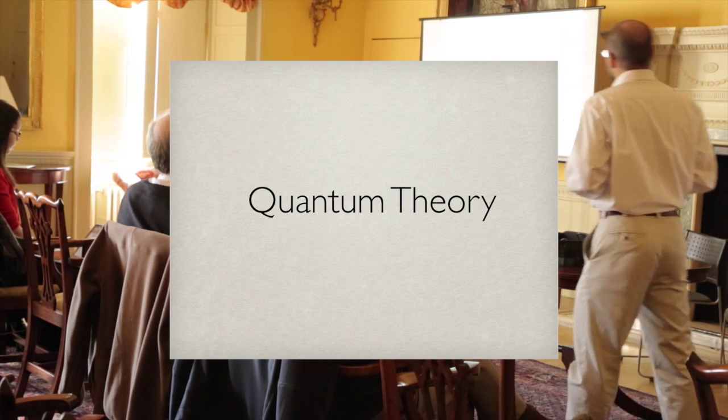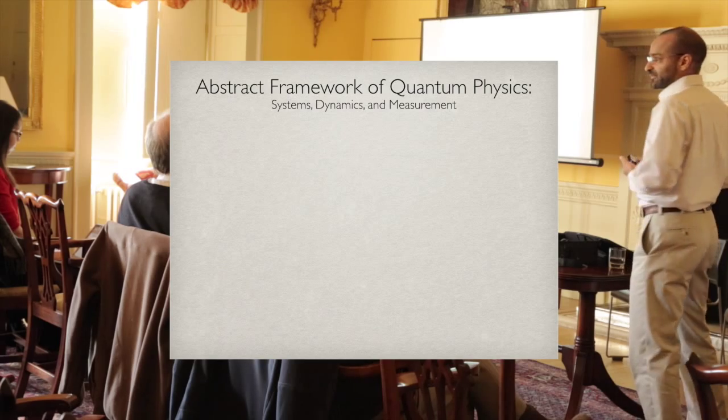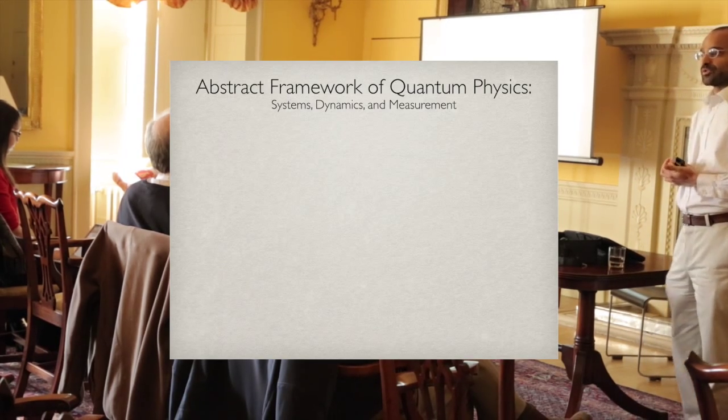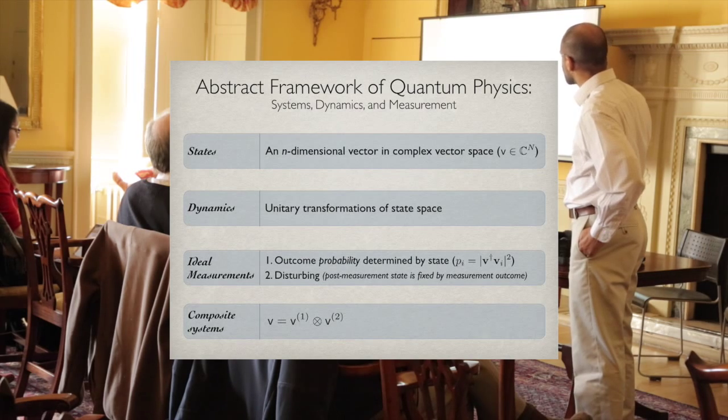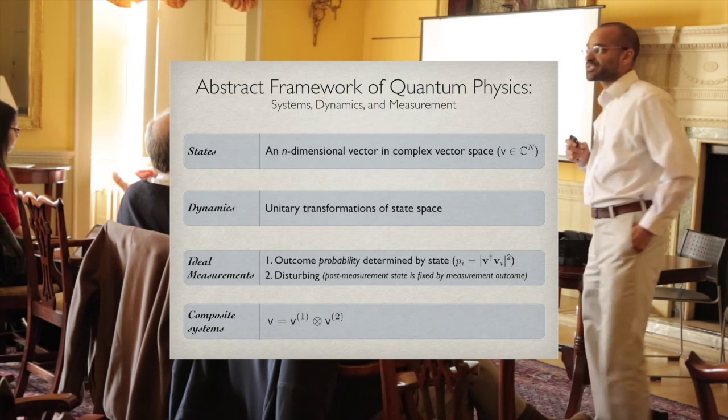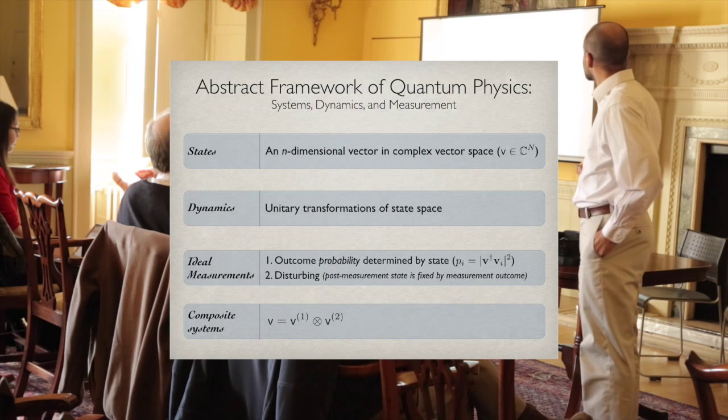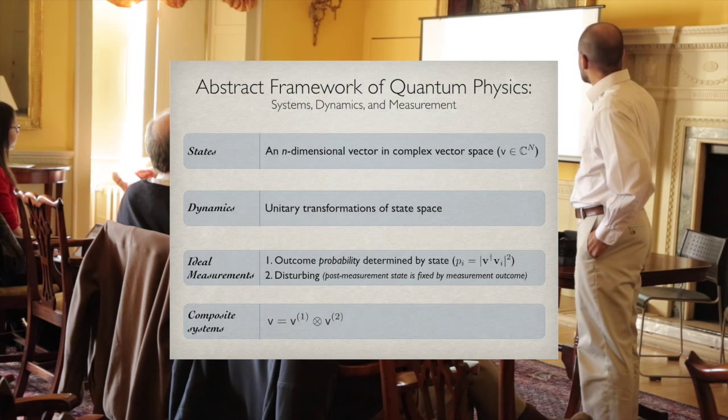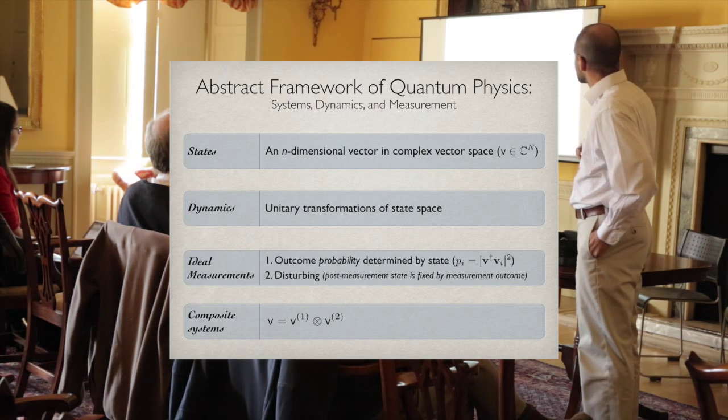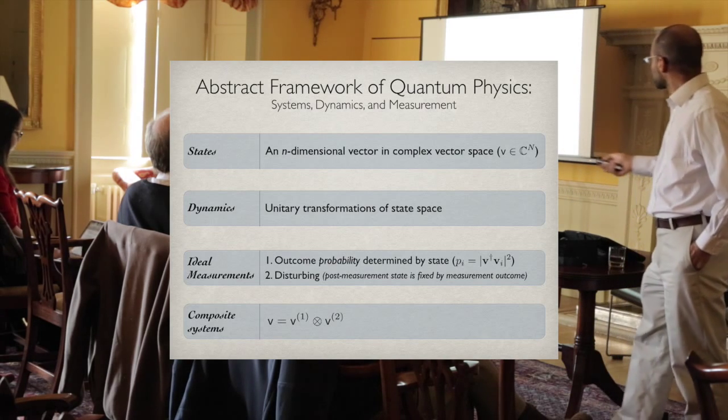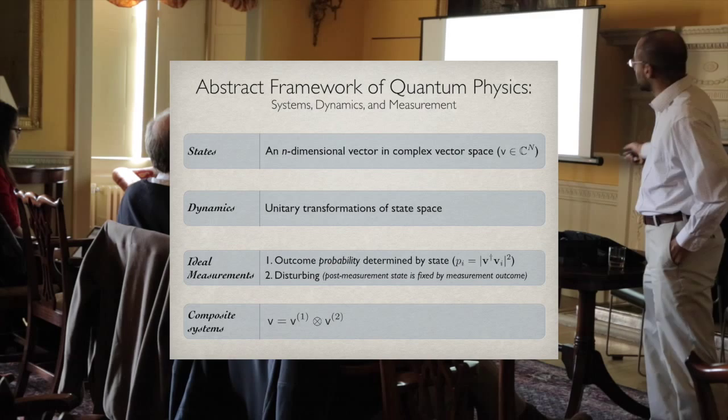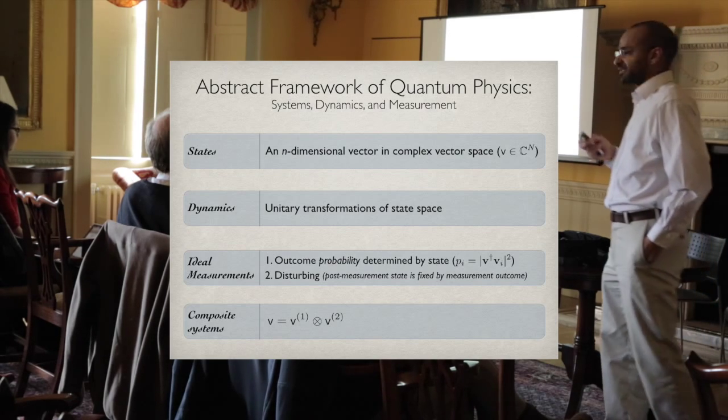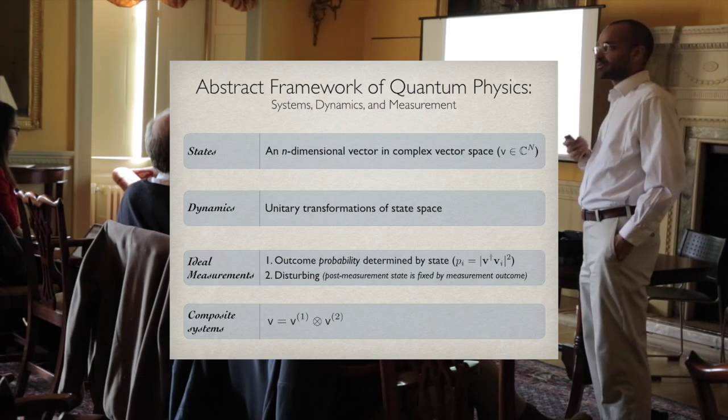In quantum theory, we have an entirely different abstract framework for building physical theories. We have similar ideas - states, dynamics, measurements, and composite systems - but the formalization is radically different. States are represented by vectors in a complex vector space. Dynamics are still one-to-one, but there's a great deal of non-triviality. How we represent measurements and composite systems are fundamentally different.